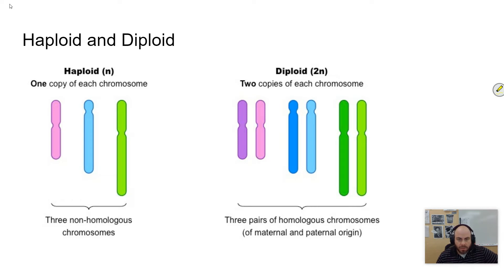Those somatic cells have 46 chromosomes: 23 come from mom and 23 come from dad. Those pairs exist in what are called homologous pairs. Here's one pair — this one comes from mom, this one comes from dad, and they have the same genes on them.